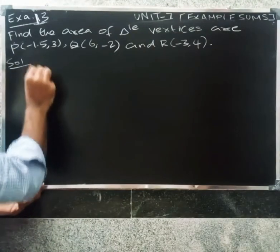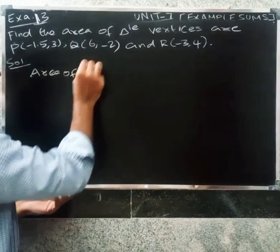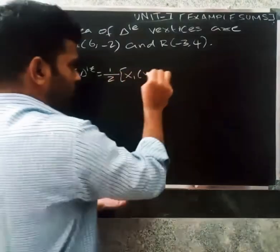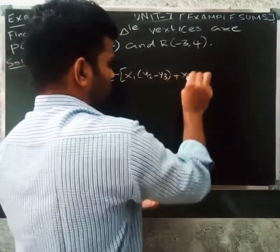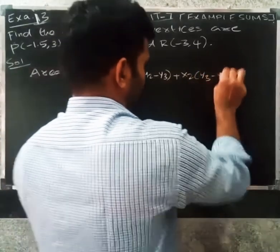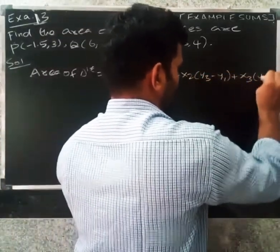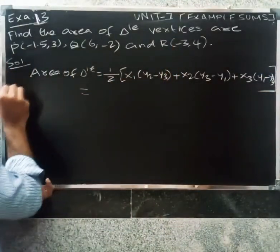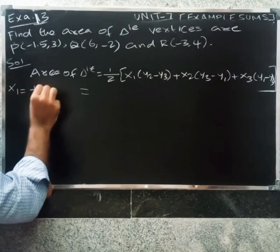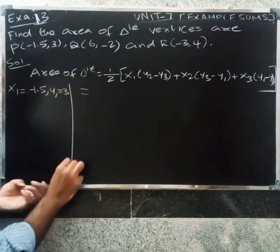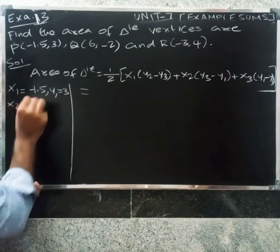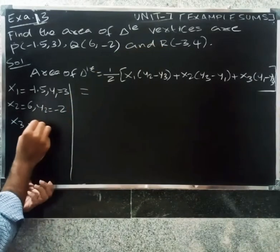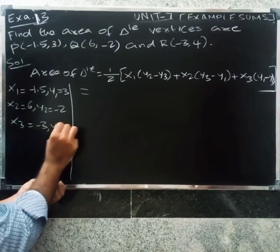Example 13. Find the area of the triangle. Using the area of triangle formula: 1 by 2 into x1(y2 minus y3) plus x2(y3 minus y1) plus x3(y1 minus y2). The values are x1 equals -1.5, y1 equals 3, x2 equals 6, y2 equals -2, x3 equals -3, y3 equals 4.